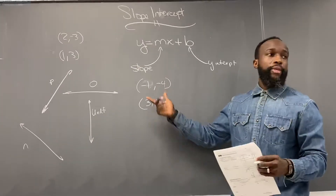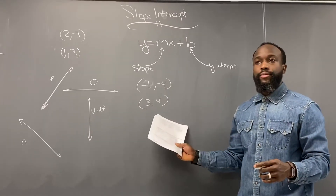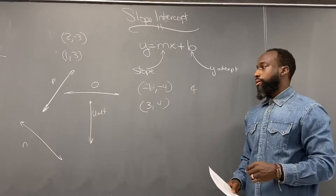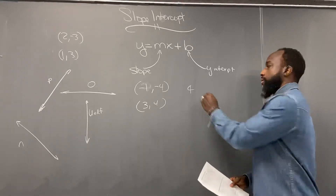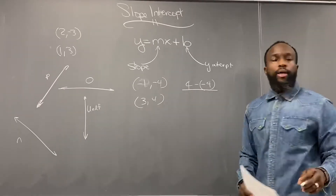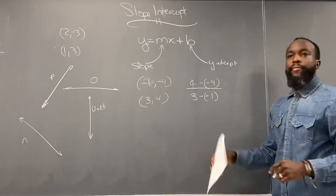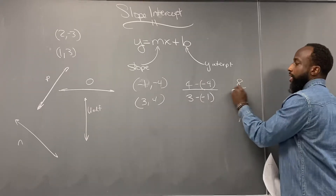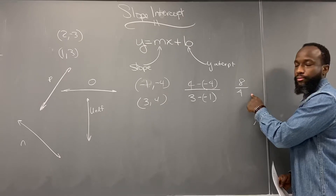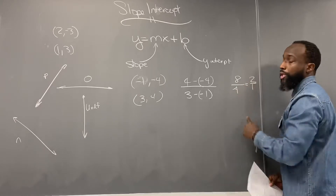Let's use the slope formula: Y2 minus Y1 over X2 minus X1. Y2 is four, Y1 is negative four, X2 is three, and X1 is negative one. Minus minus means plus, so you get eight on top. Minus minus means plus, you get four on the bottom. Eight over four simplifies to two. The slope is two.